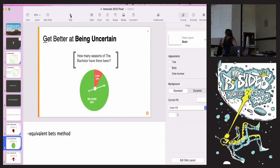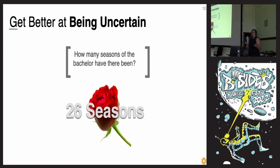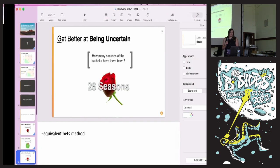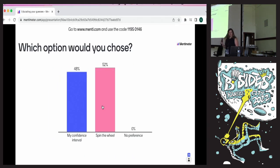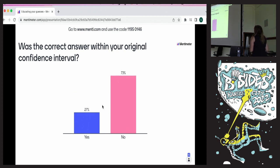So, I'm not going to leave you hanging. I will tell you the true answer is 26. There have been 26 seasons of The Bachelor. That does not include The Bachelorette, Bachelor Pad, Bachelor in Paradise, Bachelor Winter Games. None of those. Just The Bachelor, there's been 26 seasons. Okay. So let's go back to Mentimeter one more time. And let's go to the next slide. Was the correct answer in your original confidence interval? Yes or no? Be honest. It'll be interesting. So majority no. It looks like about 83% of the answer was no. The original answer was not in your confidence interval.